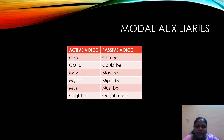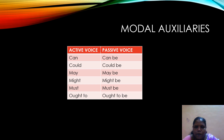Before getting into modal auxiliaries, I would like to tell you that for future continuous tense and all the perfect continuous tenses — present perfect continuous, past perfect continuous, and future perfect continuous — we don't have any passive form.